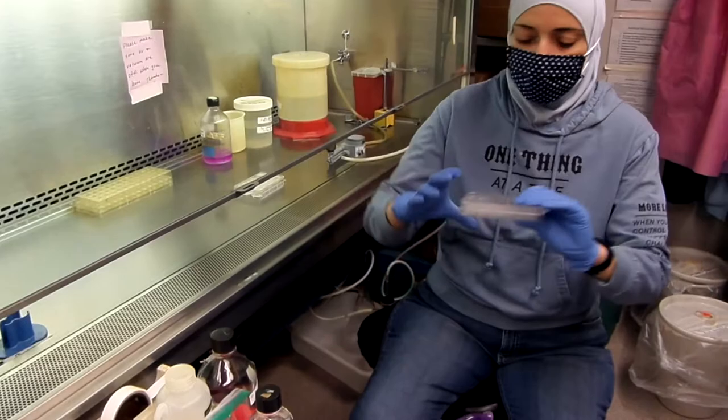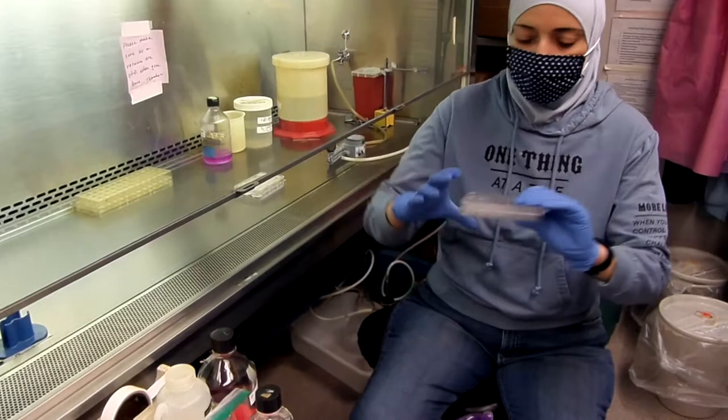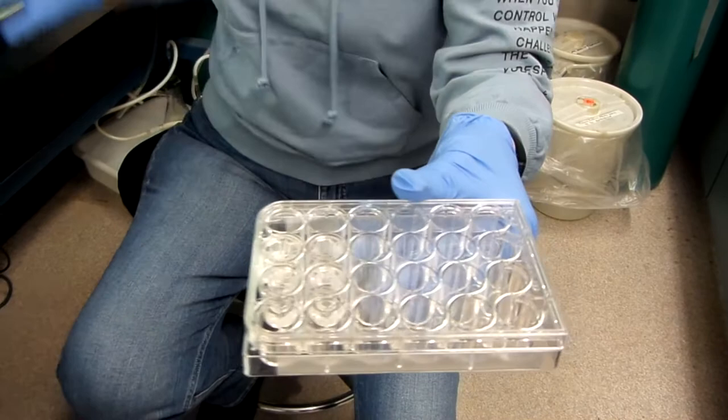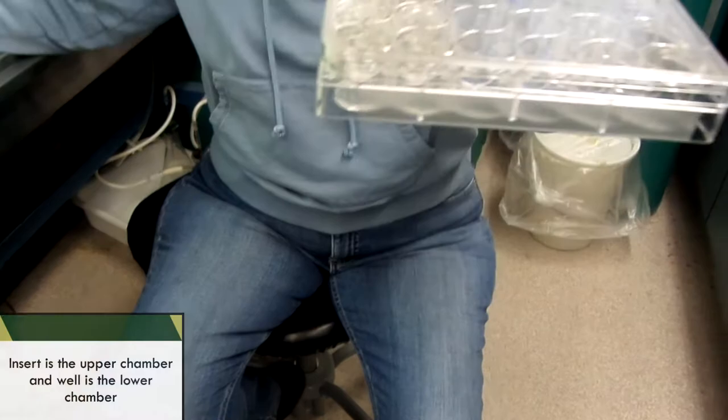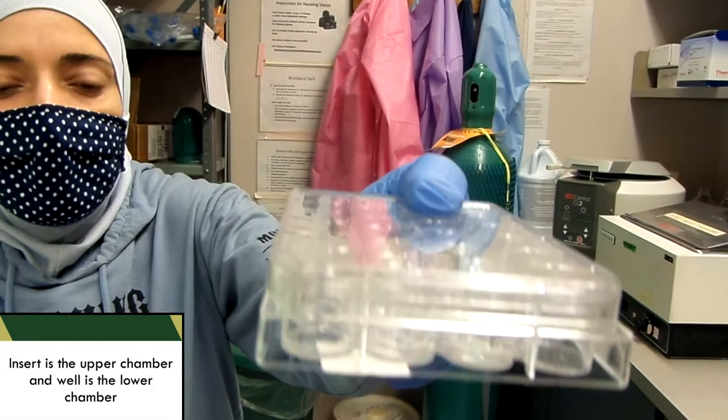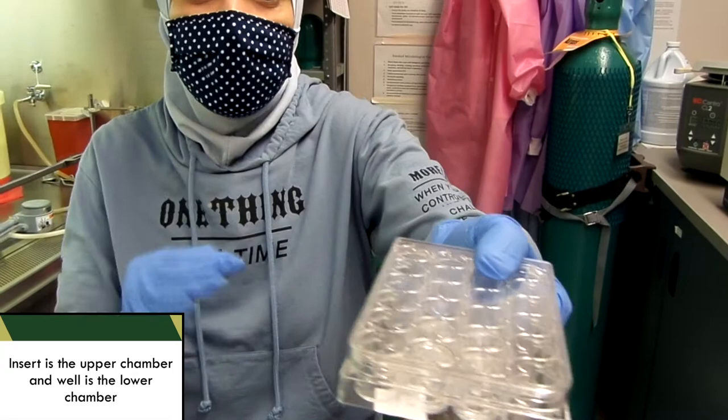So, we have this setup, and this is a trans-well plate. It's just a regular 24-well plate. You can buy 24-well plates, you can buy 6-well plates. And the idea is that these plates have an inset. Right now, maybe you cannot see it, but I'm going to show it to you when I have the plate inside the biosafety cabinet, because I have to keep everything sterile.